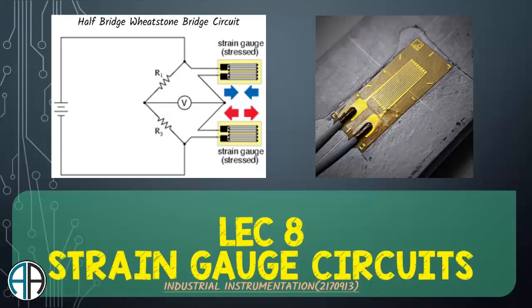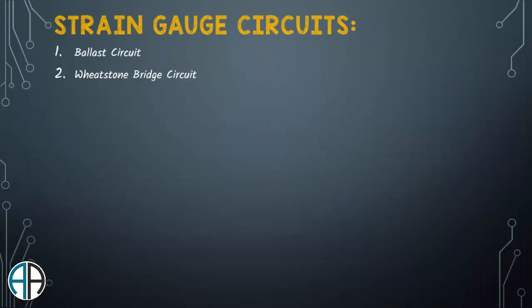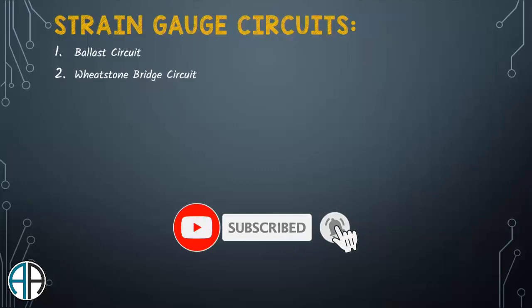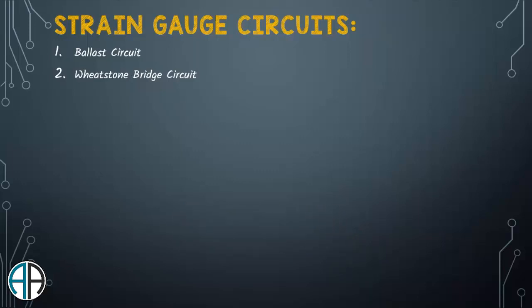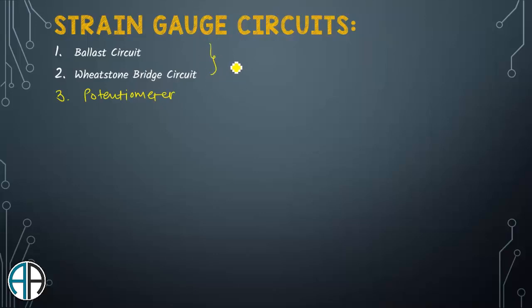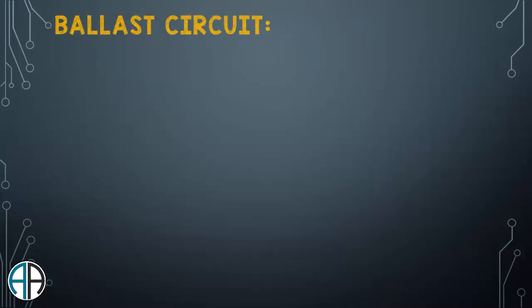Hello friends, welcome to the eighth lecture of industrial instrumentation. Today we will learn about some useful strain gauge circuits. Basically, three strain gauge circuits are used to detect results from the strain gauge: the first is the ballast circuit, the second is the Wheatstone bridge circuit, and the third is the potentiometer. According to the scope of our subject, we will study the ballast circuit and the Wheatstone bridge circuit.